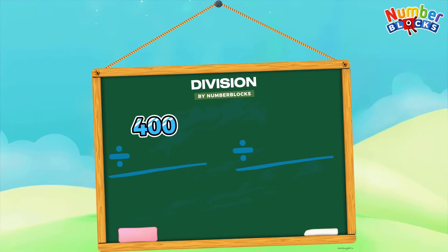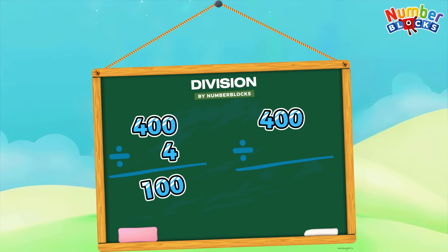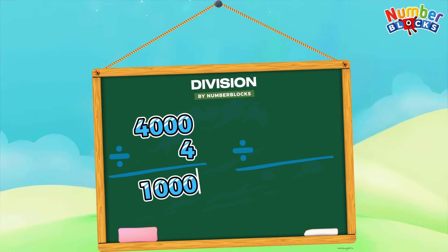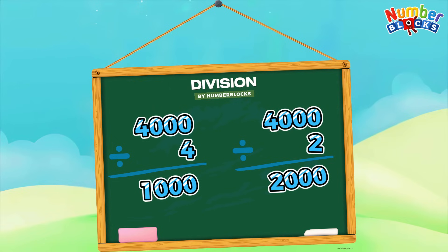400 divided by 4 is equals to 100. 400 divided by 2 is equals to 200. 1,000 divided by 4 is equals to 1,000. 1,000 divided by 2 is equals to 2,000.